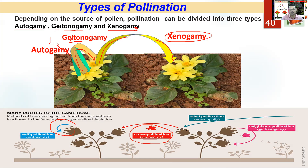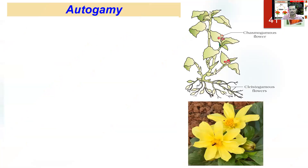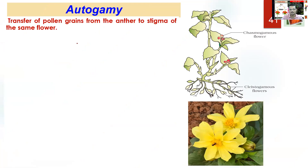Wind can be a pollinating agent, and insects can also be a pollinating agent — we'll see them one by one. Let's talk about autogamy. Pollen grains are transferred from anther to the stigma of the same flower. It is not that common, because if pollen and stigma are from the same plant repeatedly, genetic variability will be less and gradually there will be a depression — which is called inbreeding depression — and that can reduce productivity.